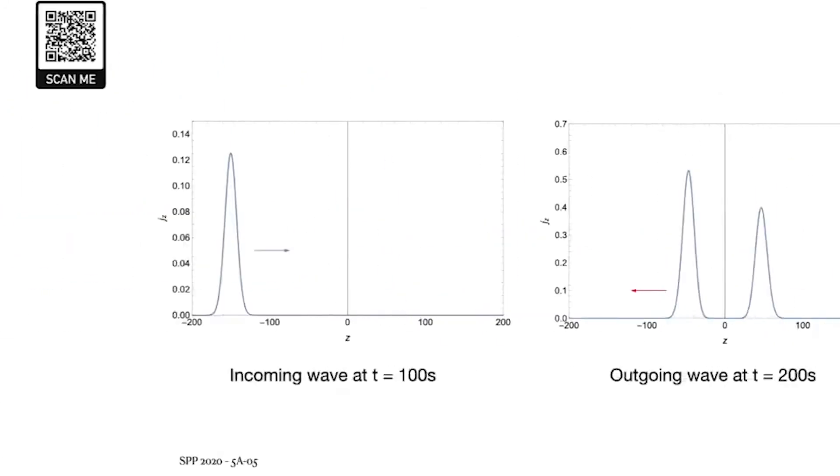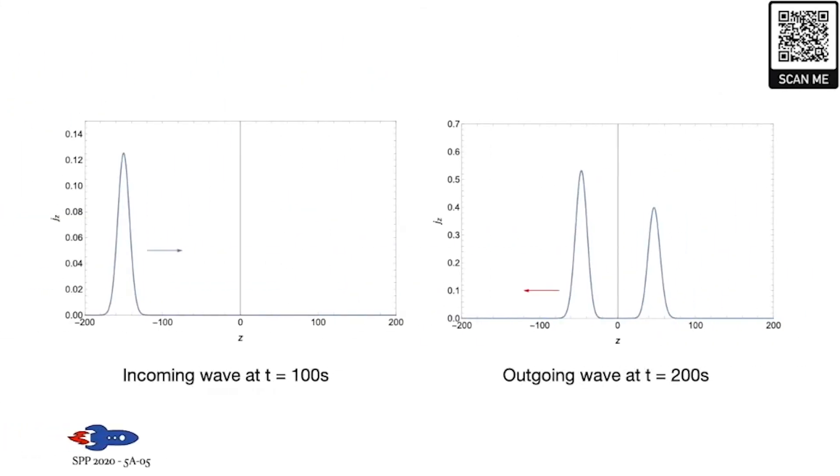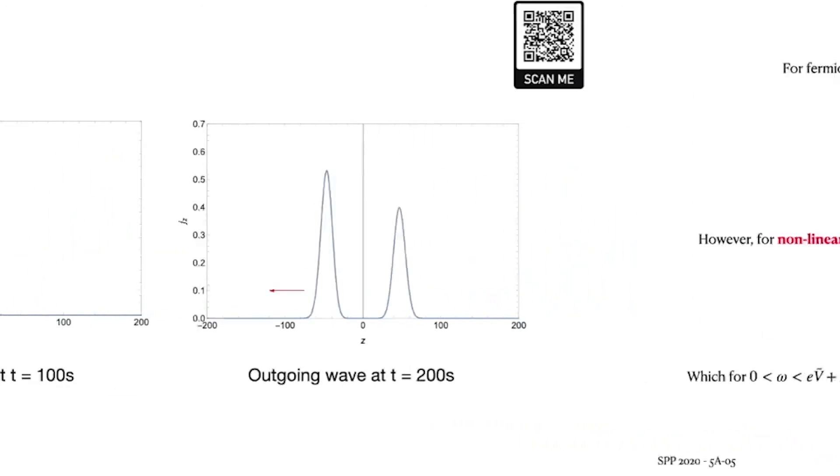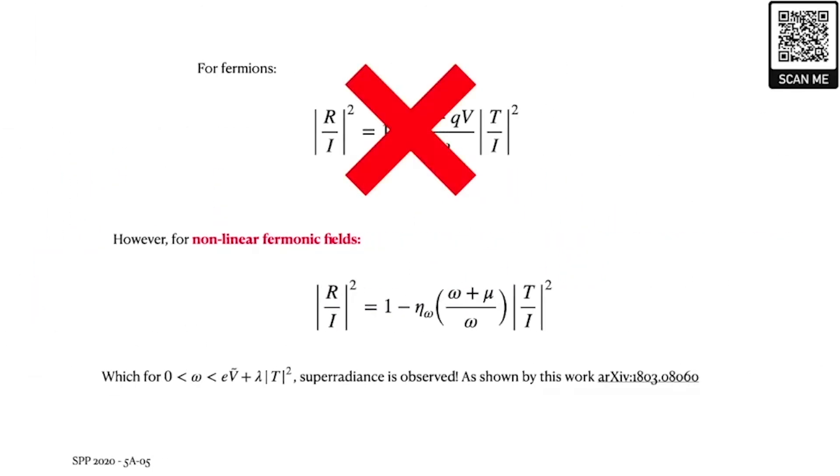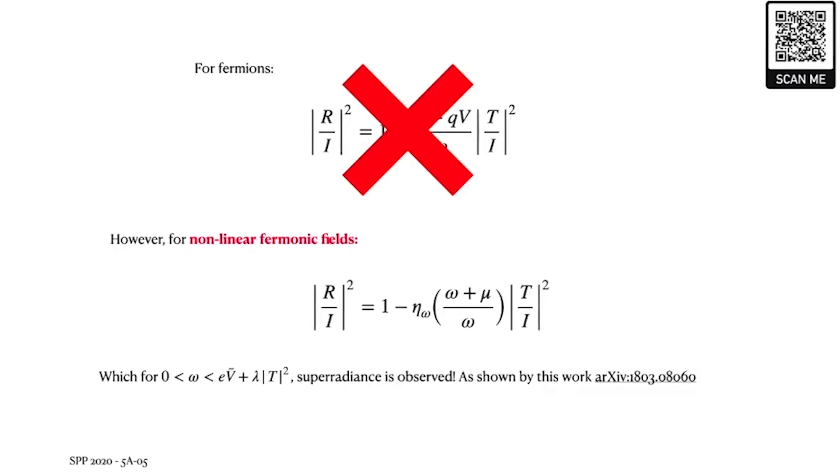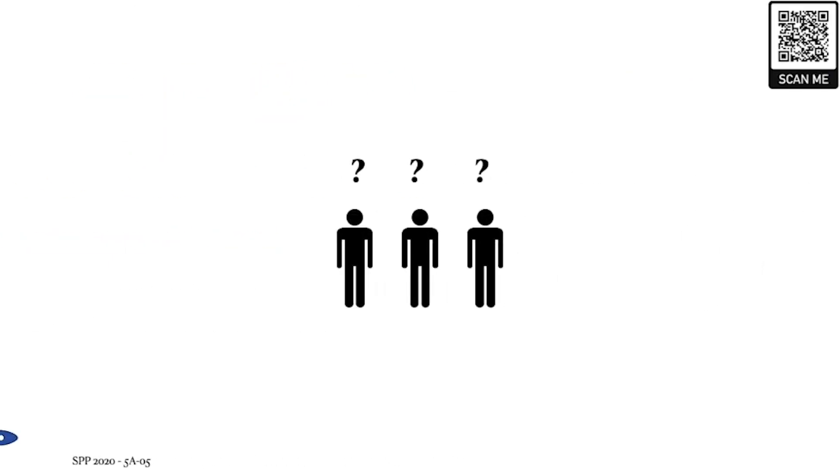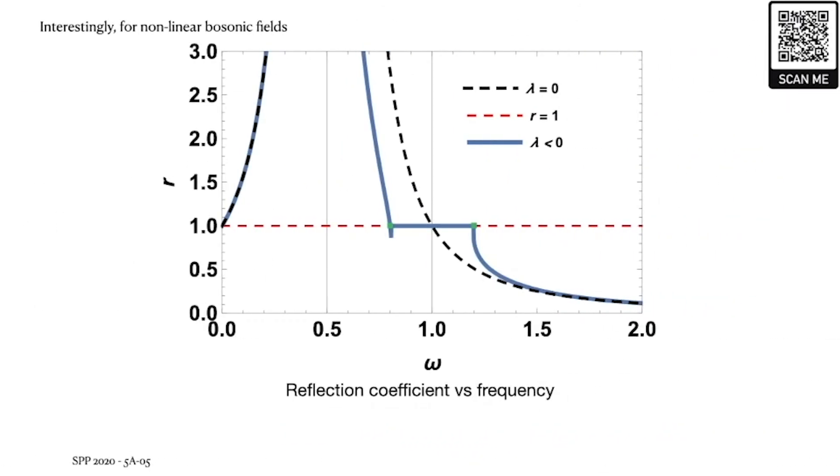Performing a time domain analysis, we get a visual on how the wave packet changes as it hits the potential. We can only observe superradiance for bosonic fields and not for fermions. However, Vicente, Cardoso, and Lopez showed that if we consider non-linear Dirac fields, we can actually observe superradiance. So we wondered, if the reverse will happen if we consider non-linear bosonic fields, will superradiance get quenched? Sadly, this is not what we found. We found something more interesting.